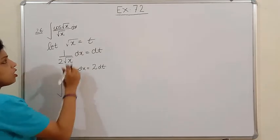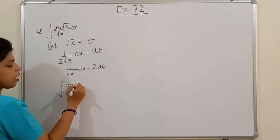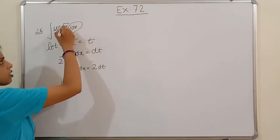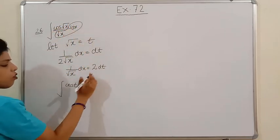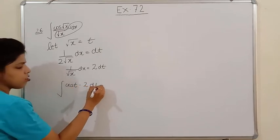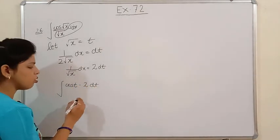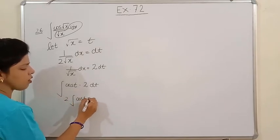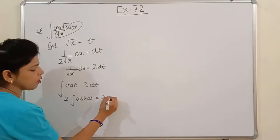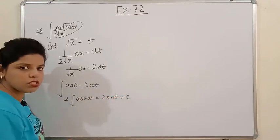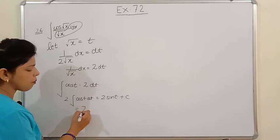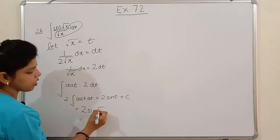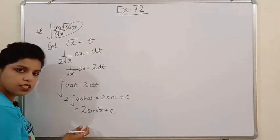The value of √x is t and the value of (1/√x)dx is 2dt. Just substituting the values in the question: 2 is a constant so take it outside, and the integration of cos(t) with respect to t is sin(t), plus c. Finally put the value of t, which is √x. So the answer is 2sin(√x) + c. Please note down.